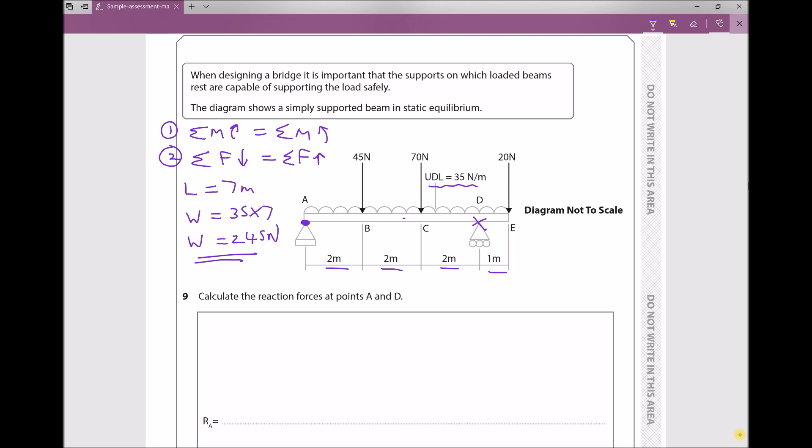So here I'm going to add our weight, it acts downwards, it's 245 newtons and it's at a distance of 3.5 meters from our support. Now in doing that we no longer have to consider our UDL because we've already taken it into consideration.